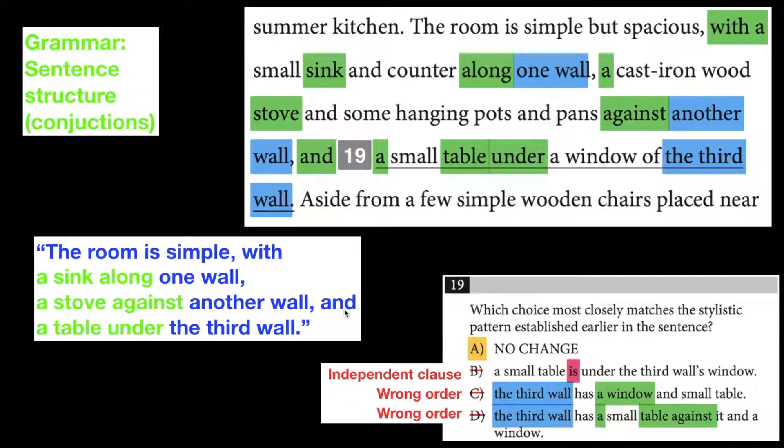A stove against another wall. And a table under the third wall. So you can see what's there, I've highlighted in green, and then one wall, another wall, the third wall, in blue.